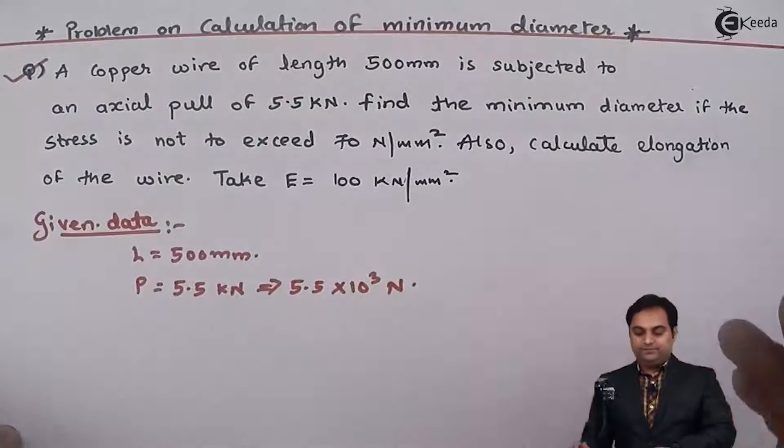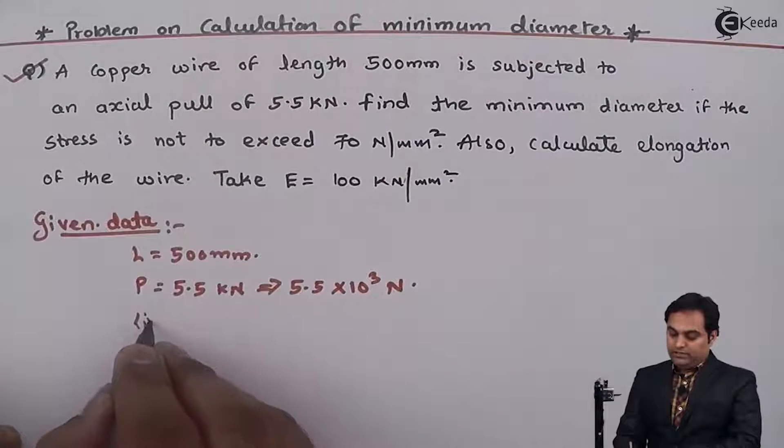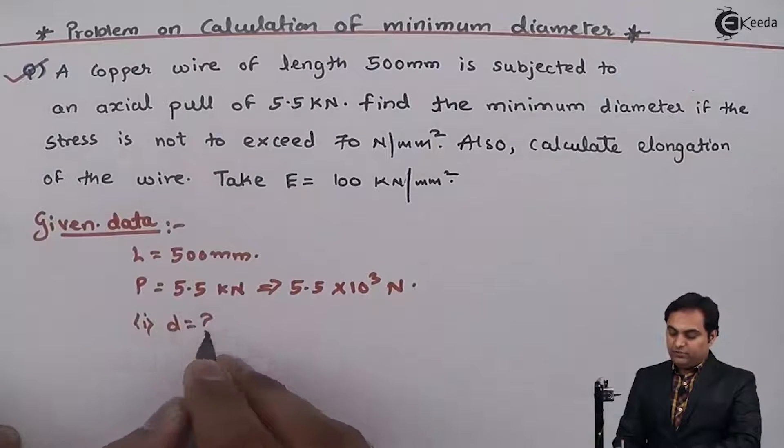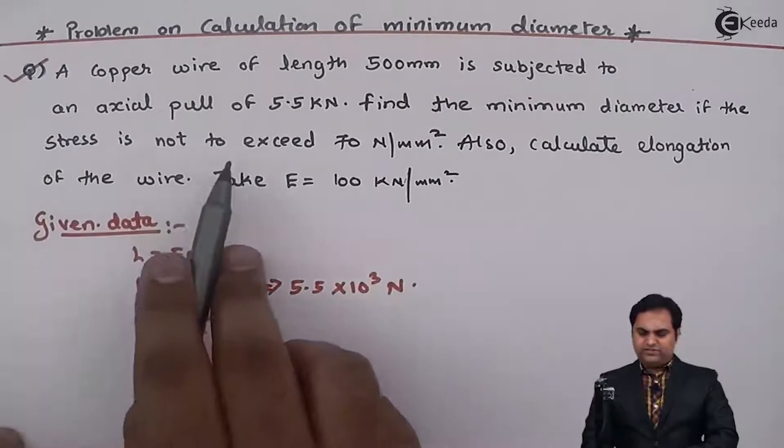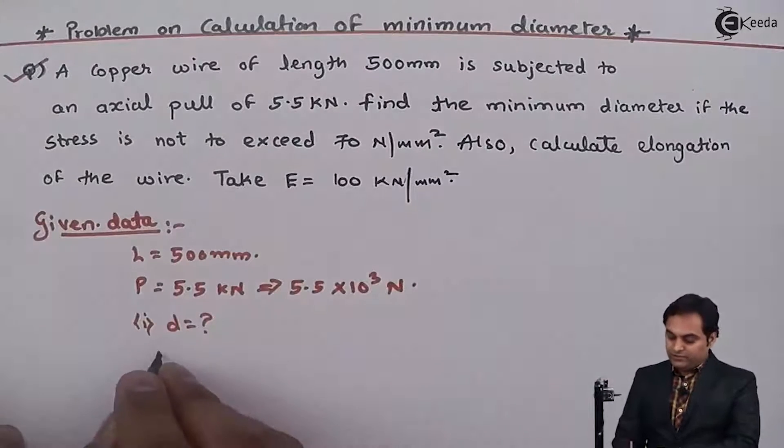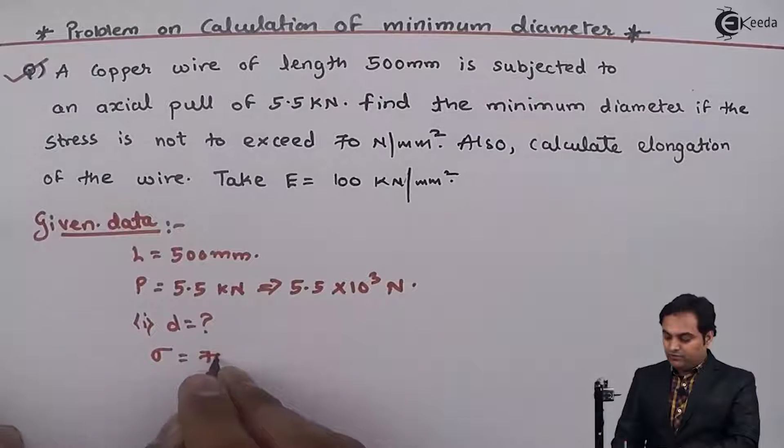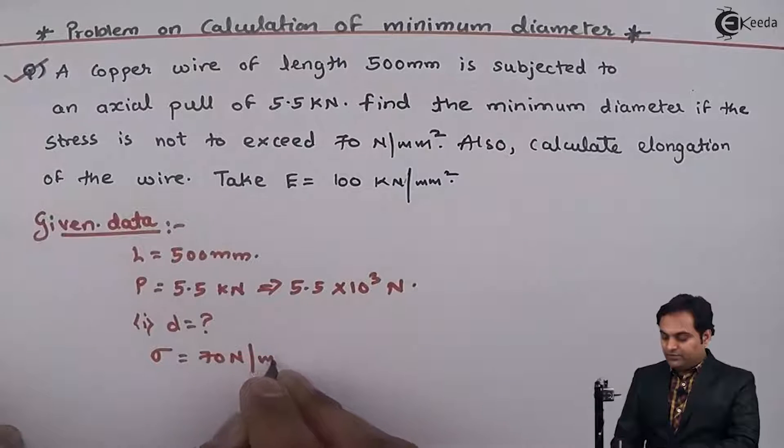Find the minimum diameter. Here I will denote the diameter as small d which we have to calculate. If the stress is not to exceed 70 N per mm square, sigma is equal to 70 N per mm square.